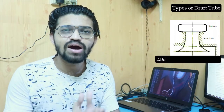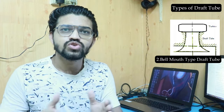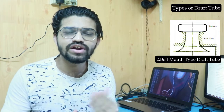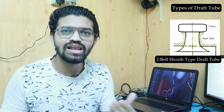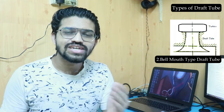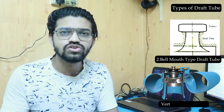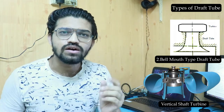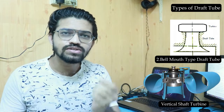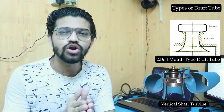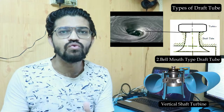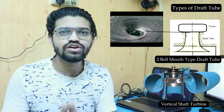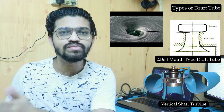The next type is the bell mouth draft tube. The shape of this particular draft tube is very similar to a bell shape. This type of tube is suitable for the vertical shaft Francis turbine, and is especially suitable when the water at the exit of the Francis turbine has a whirl velocity component.